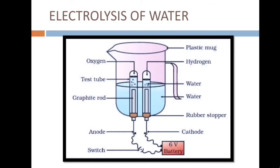Next is the electrolysis of water. Electrolysis is the process of using electricity to decompose water into oxygen and hydrogen. So to summarize, the three types of decomposition reactions are: thermolysis, which is the reaction carried out by heating; photolysis, which is the reaction that occurs by the action of light; and electrolysis, which is the process of using electricity to decompose water into oxygen and hydrogen.